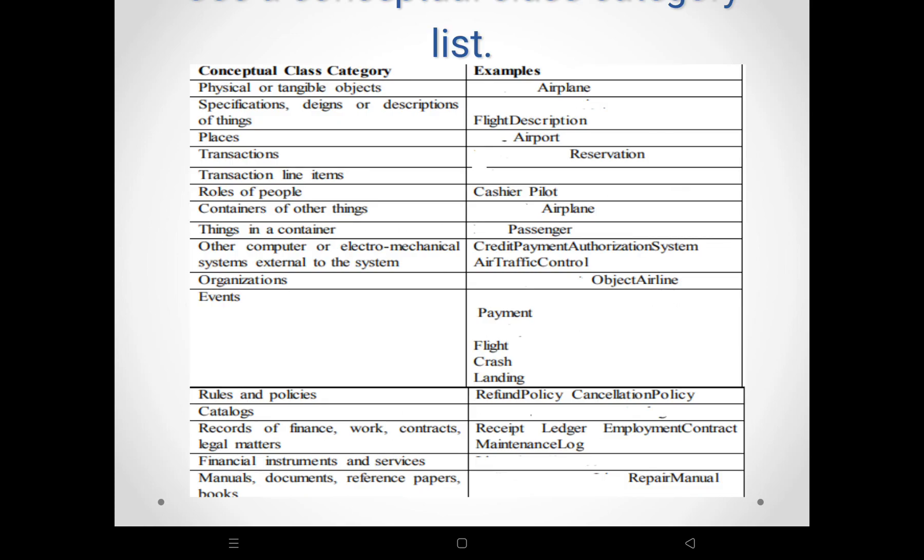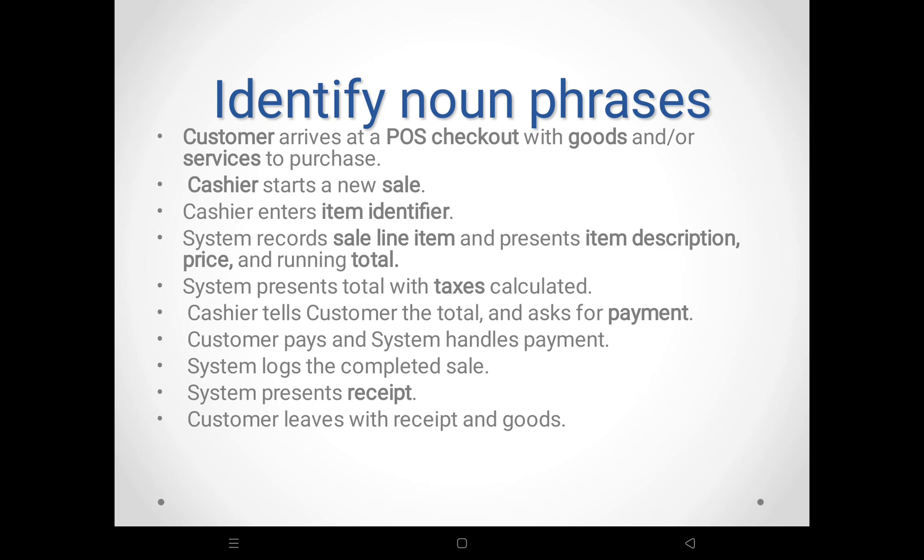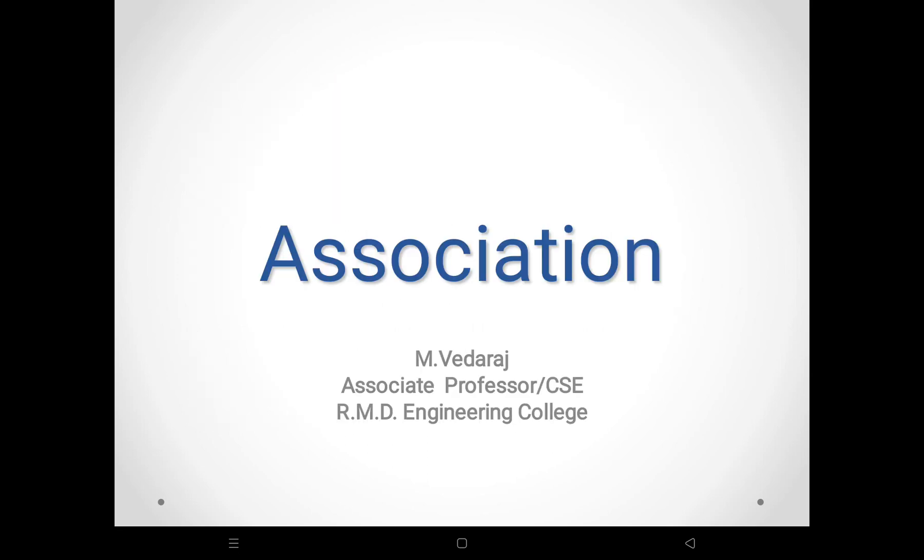To summarize, there are two techniques: use a category list to identify conceptual classes, or identify noun phrases in a scenario — all noun phrases are called conceptual classes. This is the first step of creation of the domain model: finding the conceptual classes. Thank you, students.